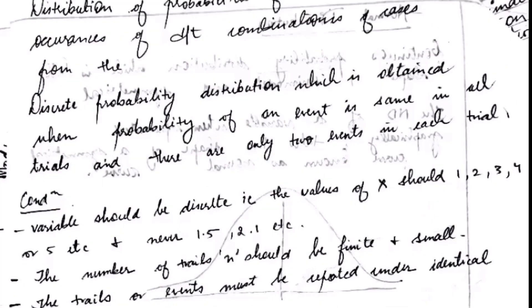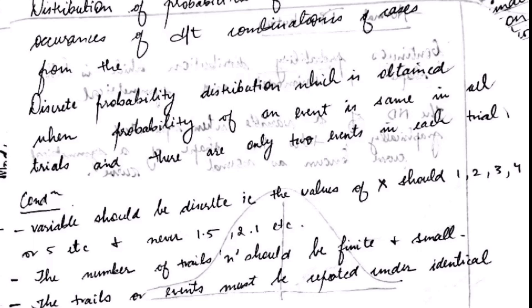Binomial distribution must also meet some following criteria. They can be like the number of observations or trials has to be fixed. That is, there are only two possible outcomes on each trial: either success or failure. The number of trials should be finite and small, and the trials or events must be repeated under identical conditions so that they are the same.